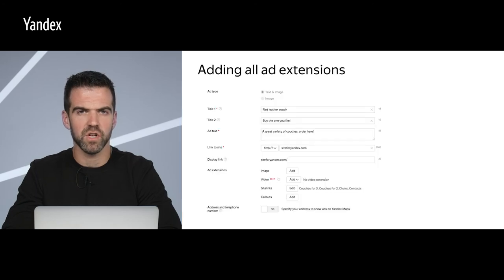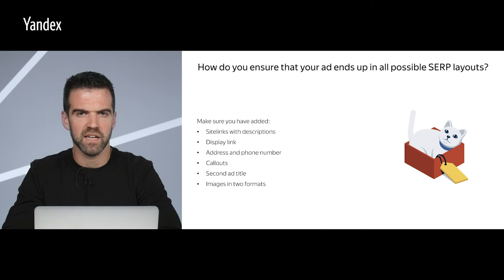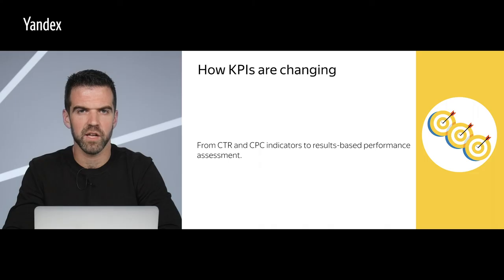First of all, you should add all additional ad extensions in the interface. How do you ensure that your ad ends up in all possible SERP layouts? By adding site links with descriptions, a display link, address and telephone number, call-outs, a second ad title, and images in two formats. We see that many advertisers are moving away from using click-through rate as a KPI and instead evaluating their campaign's results — this is a correct move.